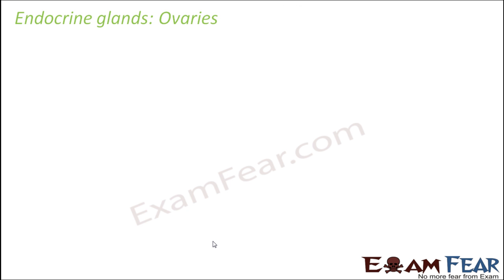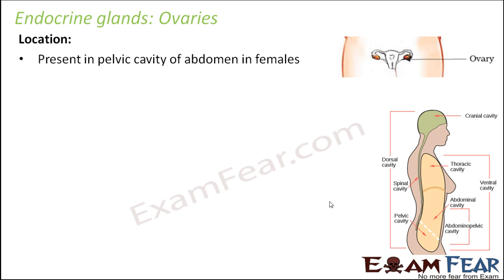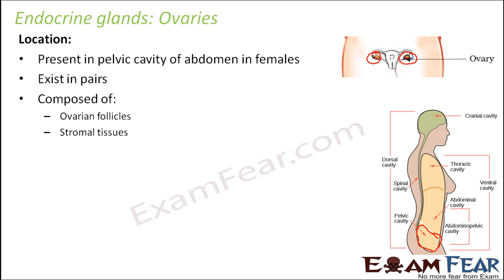Now let us look at the ovaries. Ovaries are specific to females, just as testes are present in males. They are located in the pelvic cavity of the abdomen — this is the abdominal cavity, and specifically the pelvic cavity within it. They also exist in pairs: here is one ovary and here is another. The ovary is composed of ovarian follicles and stromal tissues, where the stromal tissue forms the covering.